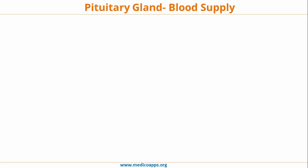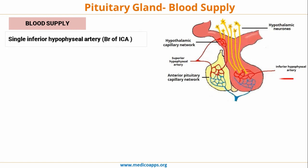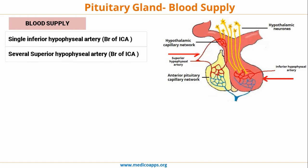The blood supply of the Pituitary Gland comes from a single inferior Hypophysial Artery and several superior Hypophysial Arteries, both branches of the Internal Carotid Artery. An important point: the inferior Hypophysial Artery is single, while the superior Hypophysial Arteries are multiple.